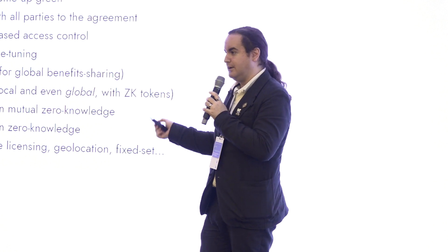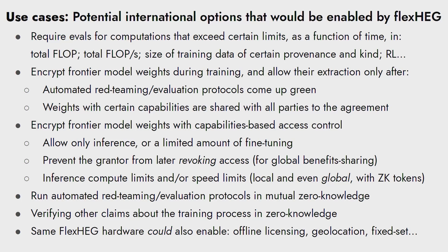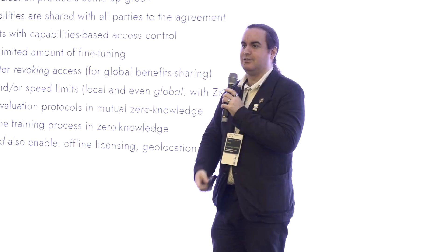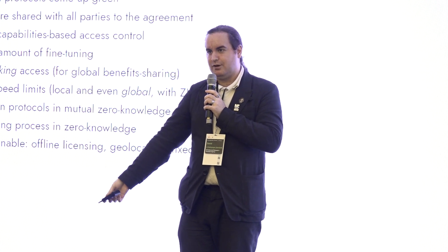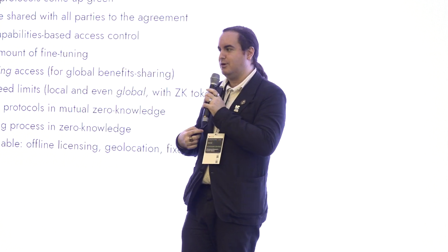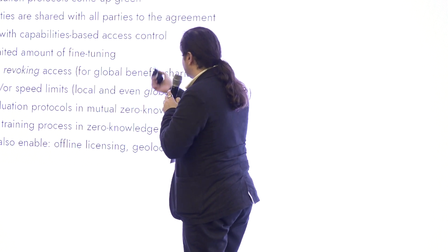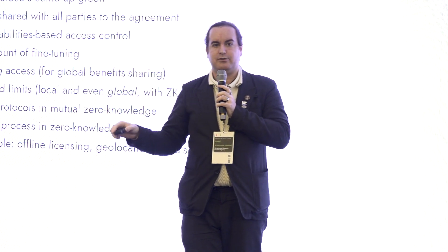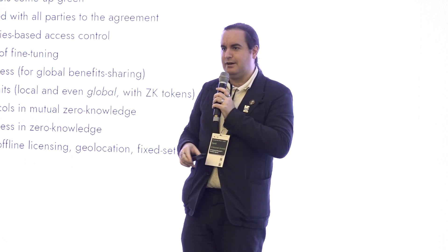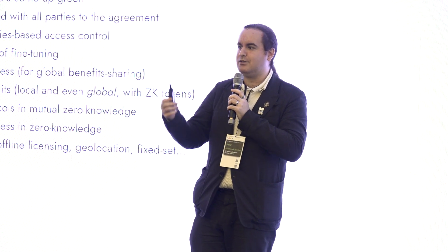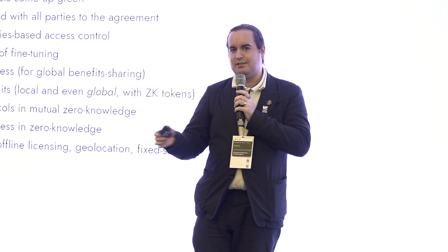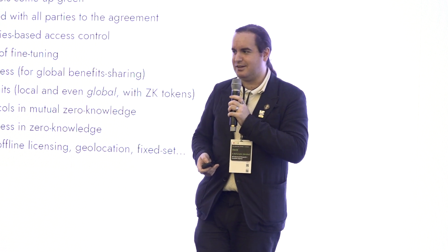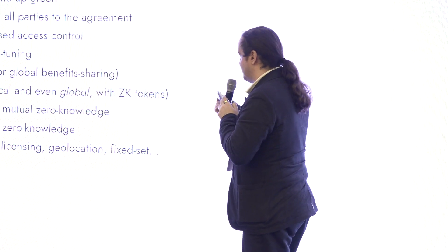Capabilities-based access control — an unfortunate name collision — means giving fine-grained access to do certain things with data and not others, like giving access to run inference but not fine-tuning. You can give that access with sovereign control — not like an API where the grantor can later revoke it — so you're running it on your own hardware in such a way that the grantor cannot revoke access but you also can't do fine-tuning. You could even have inference compute limits and speed limits, and make those global — like a crypto token as a taxi medallion for running advanced RL agents, with only 50,000 of them in the world.